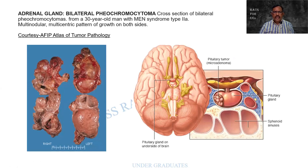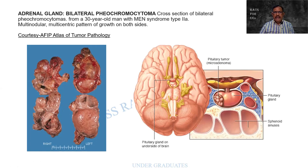This is an image of the adrenal showing a pheochromocytoma — bilateral and not symmetrical, with a lobulated appearance. This is a pheochromocytoma from a 30-year-old man with MEN syndrome type 2a. It can show a multinodular, multicentric pattern and can occur on both sides. Courtesy: AFIP.